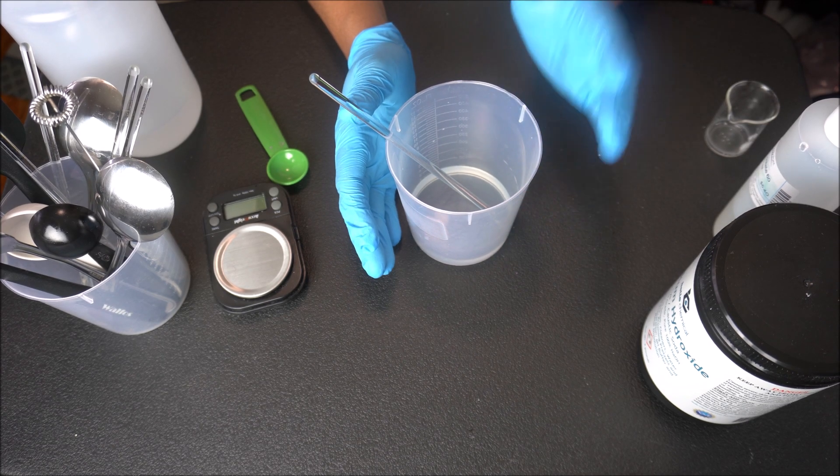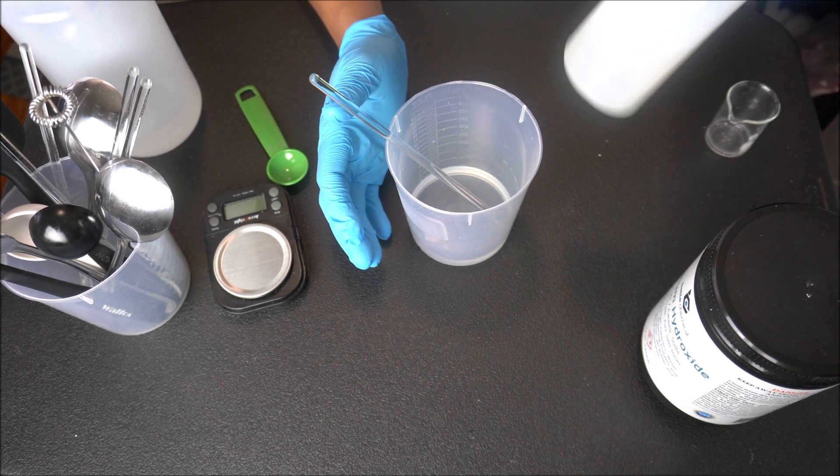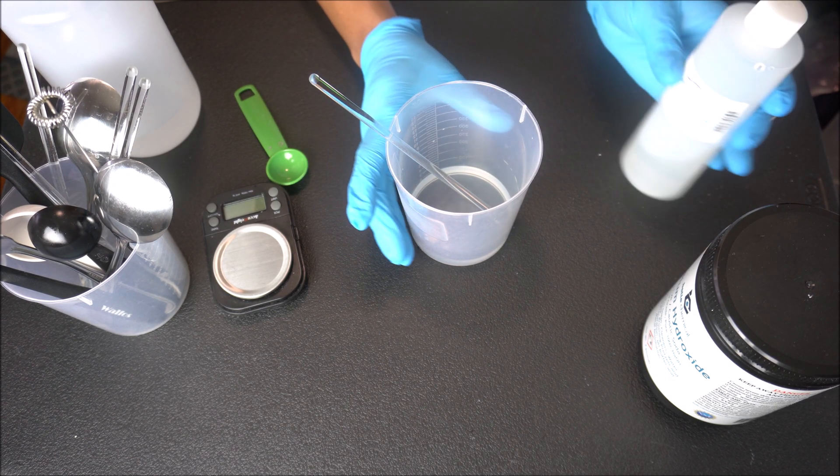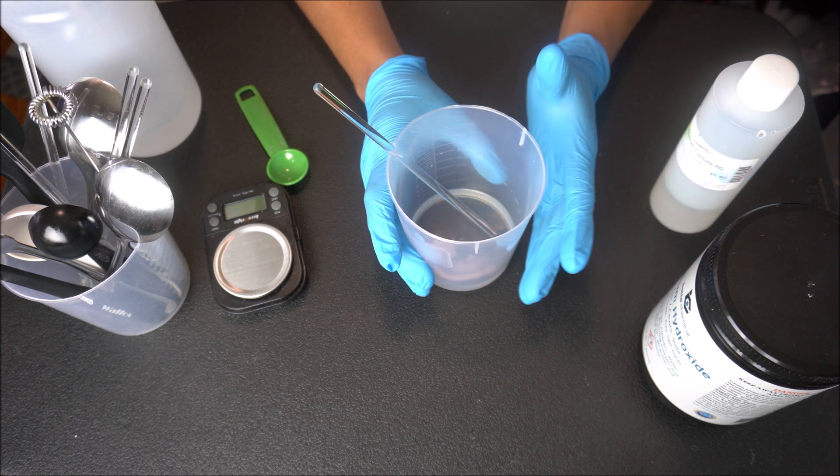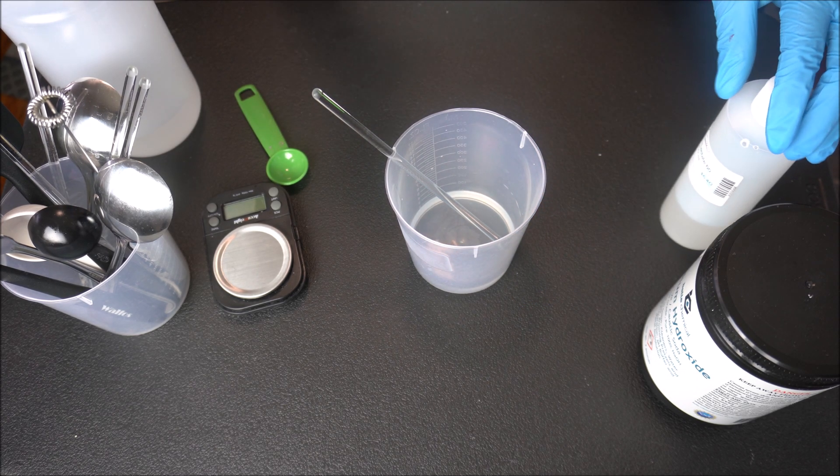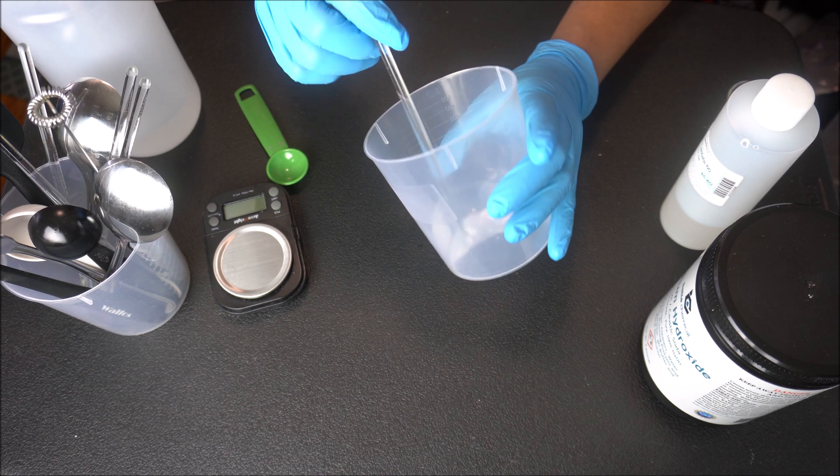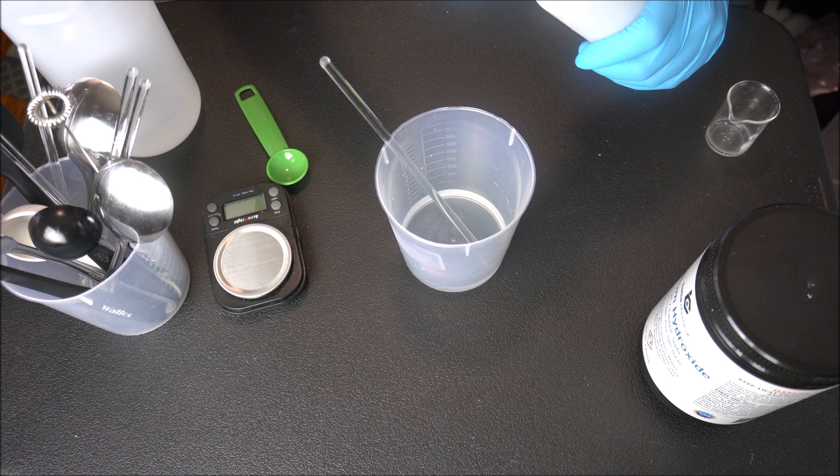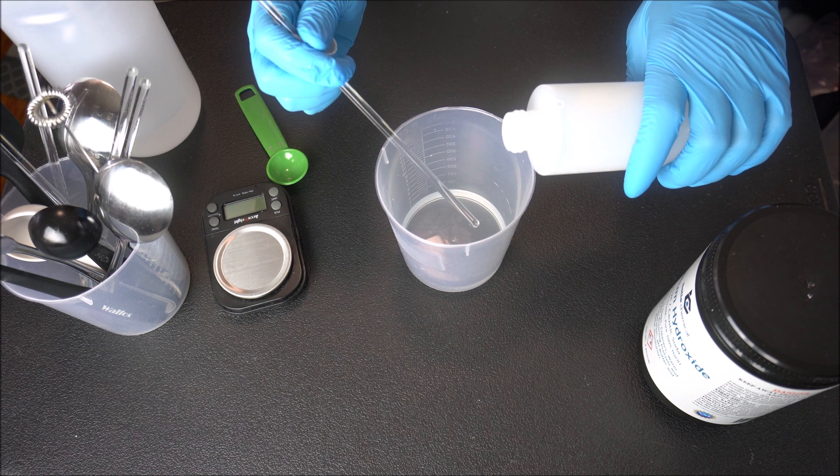Add a bit of sodium lactate if you want your soap to harden faster and also help it lather. So you just add a little bit of sodium lactate solution, just a little tiny bit, and you mix it together.